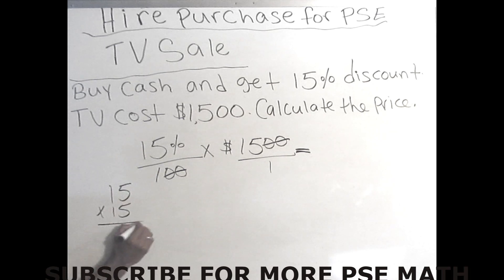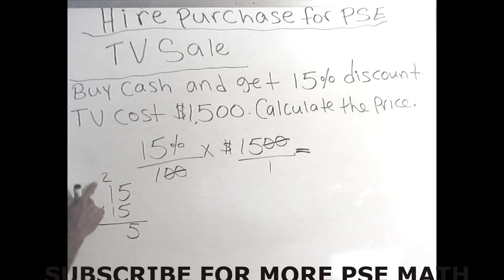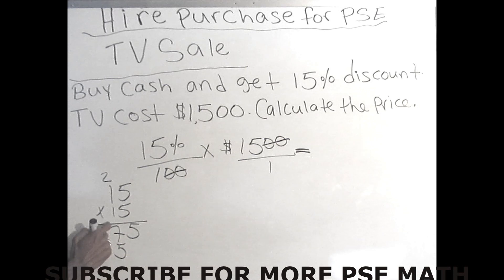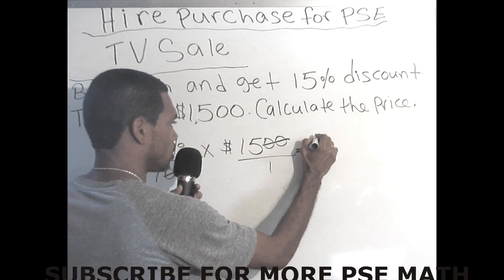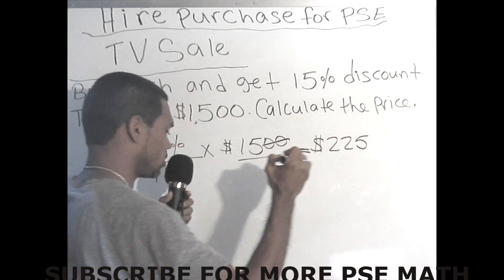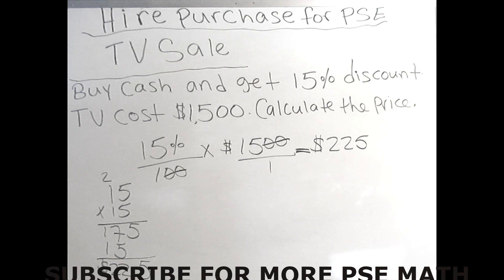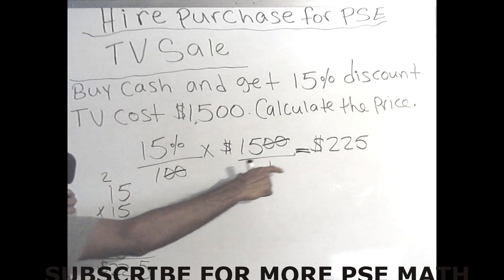Let's multiply 15 times 15, and that will tell us how much discount they gave us on the product. 5 times 5 is 25 — bring down the 5, carry the 2. 5 times 1 is 5, plus 2 is 7. Then 1 times 5 is 5 under the tens place, and 1 times 1 is 1. Bring down the 5; 5 plus 7 is 12 — bring down the 2, carry the 1; then 1, 1, 2. So 15 times 15 is 225. This $225 is the discount they gave us when we purchased the TV with cash.